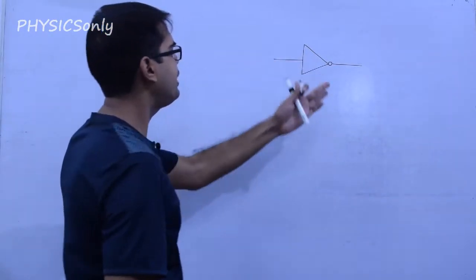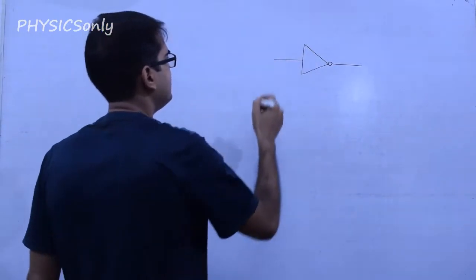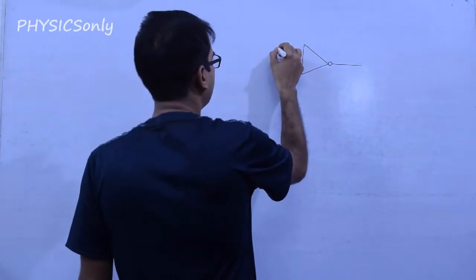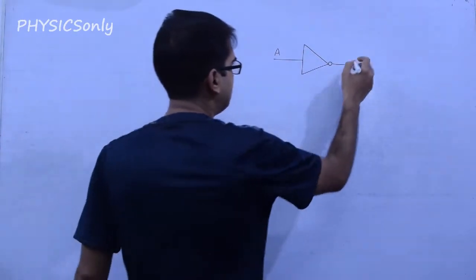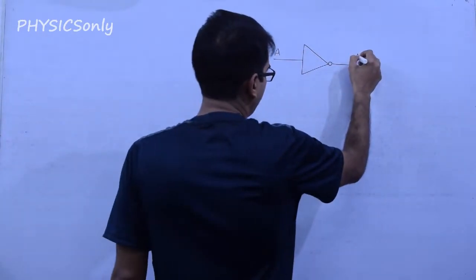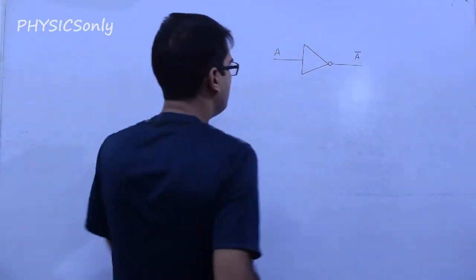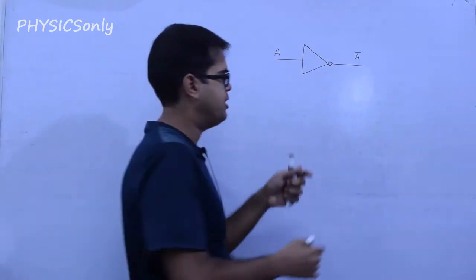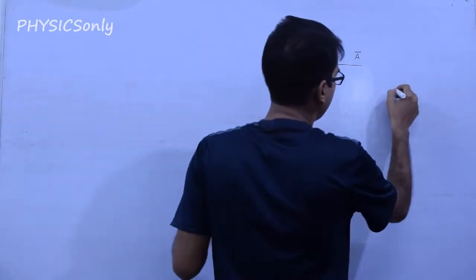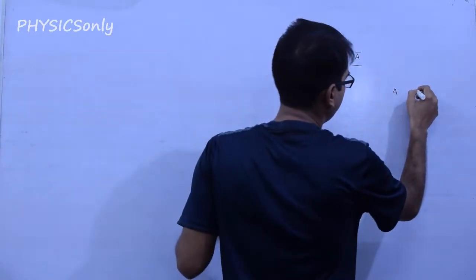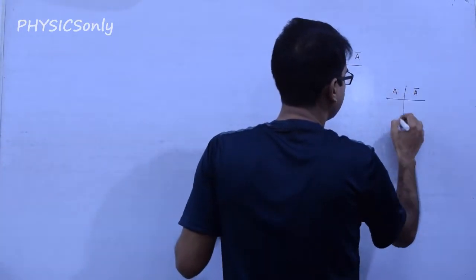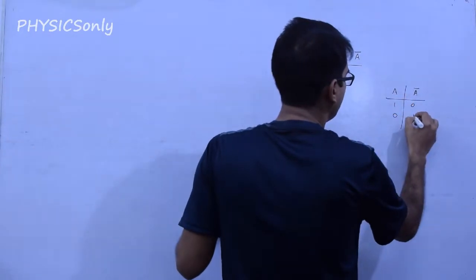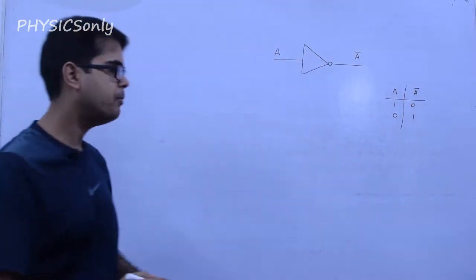Not working. Input A, output A-bar. High state, low state, low state, high state — truth table simple. 1, 0, 0. This is the NOT gate function.